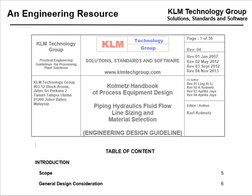A lot of people ask me about the Coleman's Handbook of Process Equipment Design. If you've searched anything on the web about engineering design or equipment, it'll send you to the Coleman's Handbook of Process Equipment Design. This was the first chapter we did in January 2007: hydraulic, fluid flow, line sizing, and material selection.